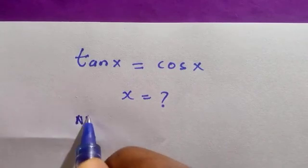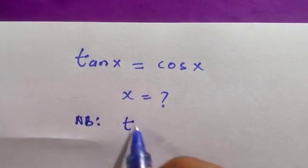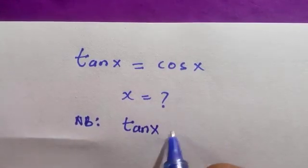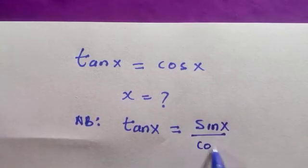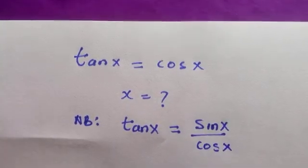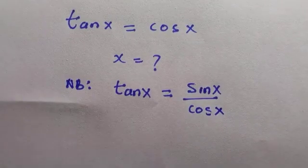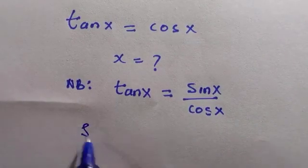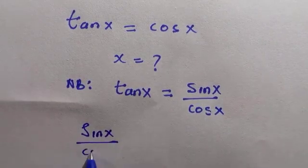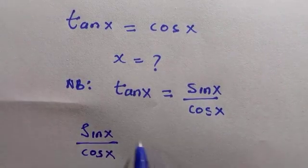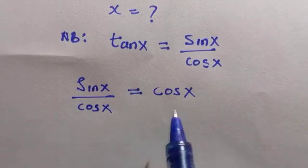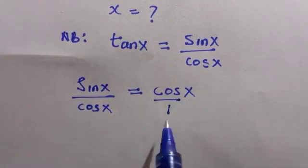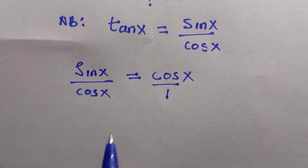We know that tan X is an identity of sin X divided by cos X, so we will replace it in the given problem: sin X divided by cos X equals cos X. Since cos X is divided by 1, we are going to cross multiply.